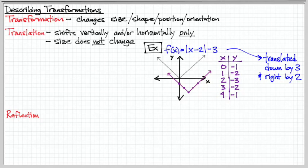We had a reflection type of transformation. In this case, we're flipping the graph over a line of reflection.